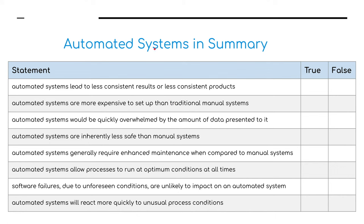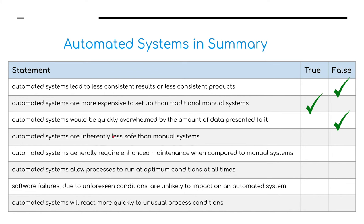In summary: automated systems lead to less consistent results — false. Automated systems are more expensive to set up than traditional manual systems — true. Automated systems would be quickly overwhelmed by the amount of data presented — false. Automated systems are inherently less safe than manual systems — false.